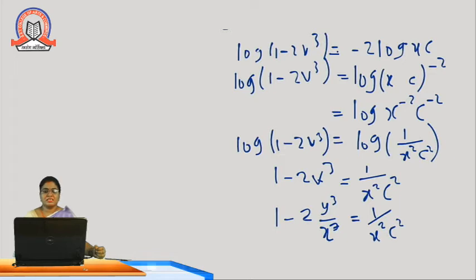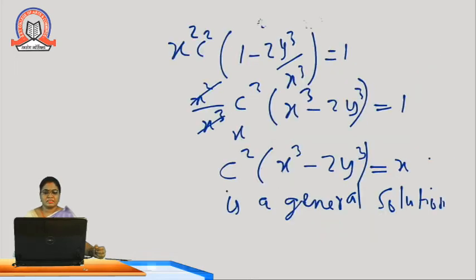This is the general equation. Rearranging, we get c² x³ minus 2y³ equal to x. This is the general solution.